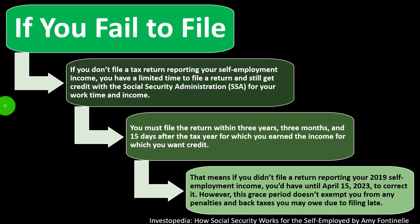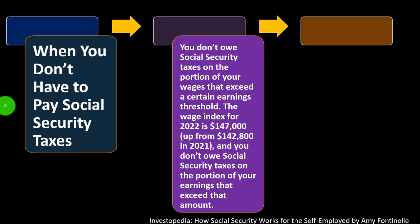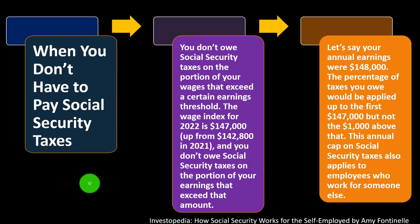This grace period doesn't exempt you from any penalties and back taxes you may owe due to filing late. When you don't have to pay Social Security taxes: you don't owe Social Security taxes on the portion of your wages that exceed a certain earnings threshold. The wage cap for 2022 is $147,000, up from $142,800 in 2021, and you don't owe Social Security taxes on the portion of your earnings that exceed that amount. Once you clear that threshold, you're not paying more taxes, and part of that is because you're not getting any added benefit from income past that threshold.